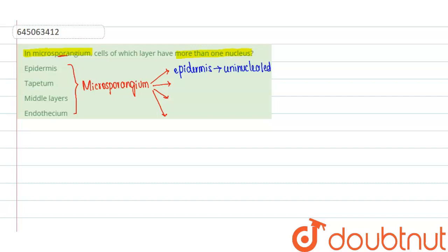Now let us see the layer just below the epidermis, that is the endothecium. Endothecium is the layer present below the epidermis and it has radially elongated cells. It is also uninucleated only.